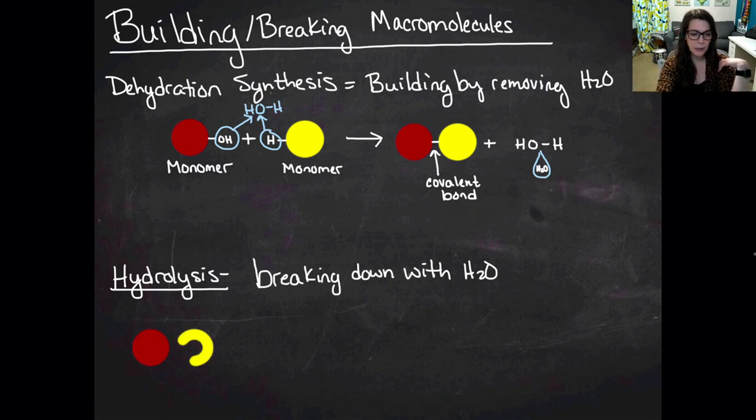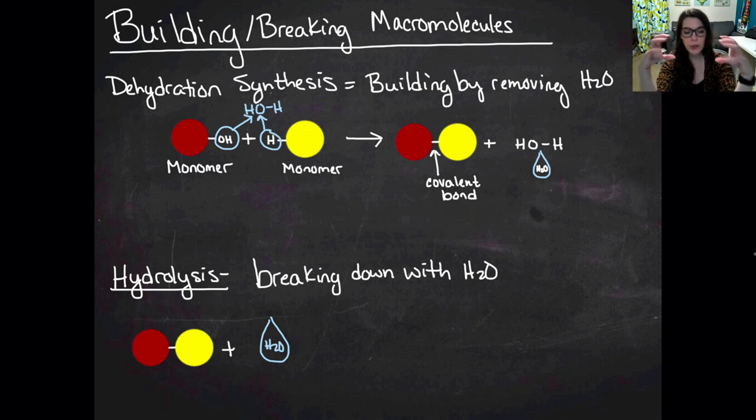So basically what's going to happen is I'm going to have a dimer, the same dimer that we had above. And under the correct environmental conditions, when there's catalysts like an enzyme present, what will happen is it will cause the monomers to break apart. And there has to be water present for this to happen because when those monomers break apart, now they're missing electrons again.